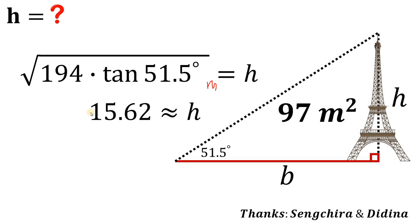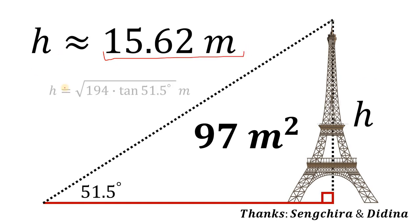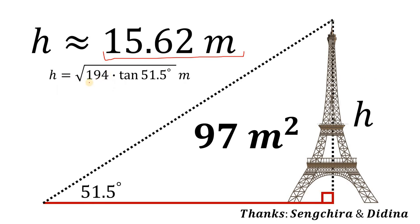Therefore, our answer to the question — what is the height of the tower? — is approximately 15.62 meters. Or, using the exact value, H equals the square root of 194 times tangent of 51.5 degrees meters. And as always, we are done.